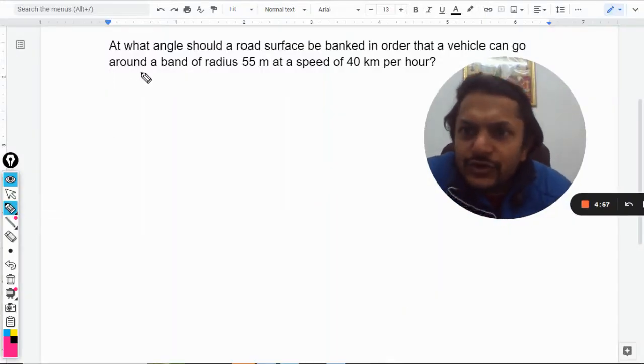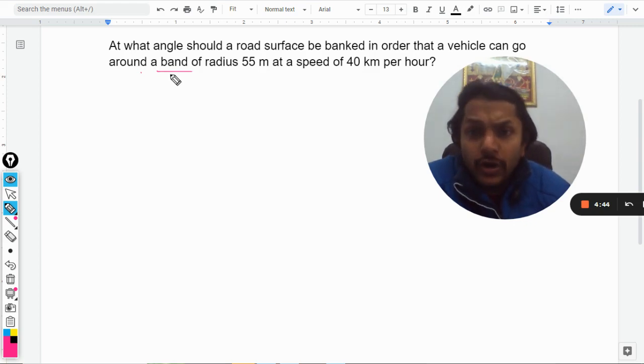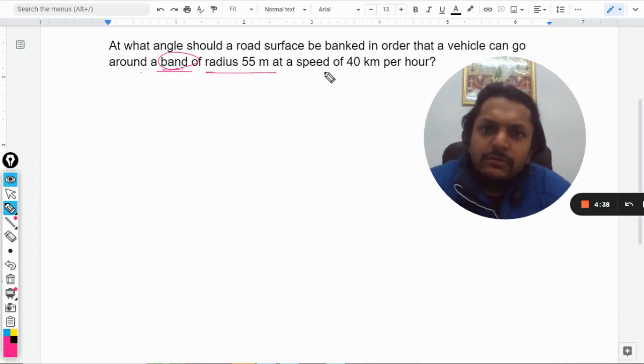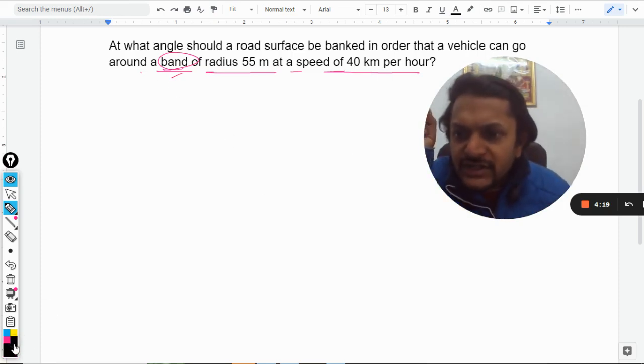Okay dear students, let's see what is there in this question. At what angle should a road surface be banked in order that a vehicle can go around a turn of radius 55 meters at a speed of 40 kilometers per hour? This is one of the questions I got on this YouTube channel, and the screenshot was not that proper, so I typed it here and there was some error.